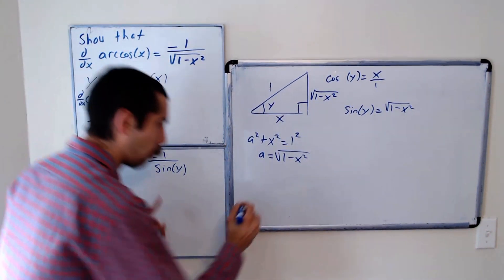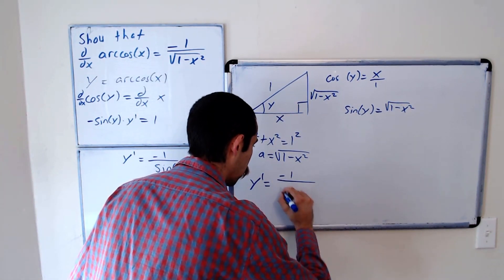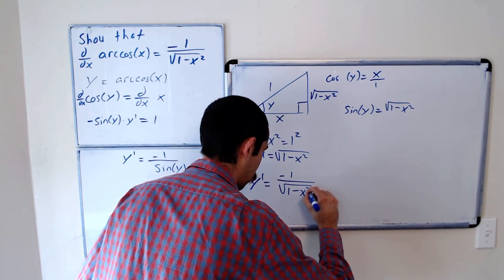Putting this all together, we have y prime is equal to negative 1 over the square root of 1 minus x squared.